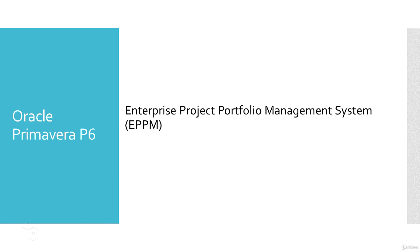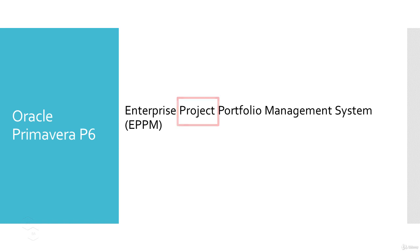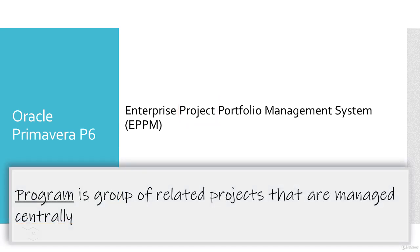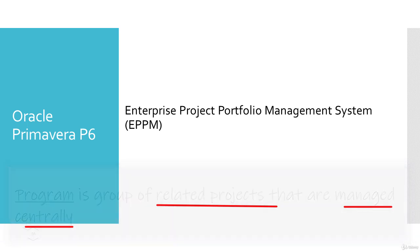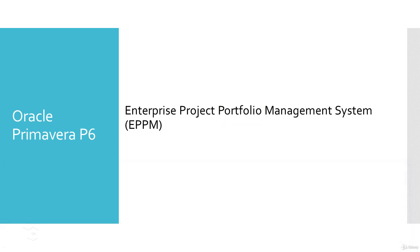If you remember from our previous discussion, a project is a temporary endeavor undertaken to create a unique product, service, or result. A program is a group of related projects that are managed centrally. A portfolio is a group of related projects, programs, and sub-portfolios that are managed centrally. By using Oracle Primavera P6, we can manage and control a large number of projects in an organization.